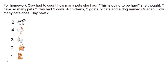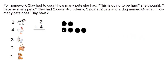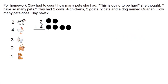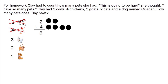Rather than tackle this whole problem at once, we're going to make it simpler and break it down into simple parts. The first thing we're going to do is figure out how many cows and chickens Clay has. Clay has two cows and four chickens. I'm going to use the make a picture strategy — I'll include a link below to that video. Two cows, four chickens: one, two, three, four, five, six. We need to stay organized because we have so many steps, so we've now counted for the cows and the chickens.